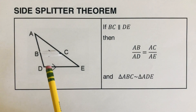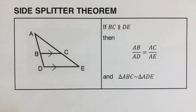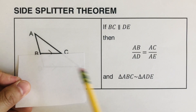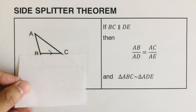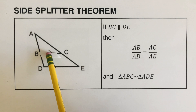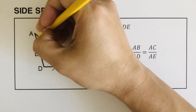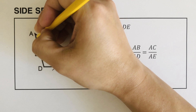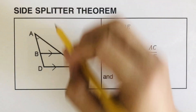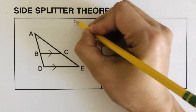Line BC splits the triangle into two, so now we have a small triangle on top and then the big triangle, which is the whole thing. They are sitting at exactly the same angle right here — this angle is the same for both of them. That's the reason why this is SAS.